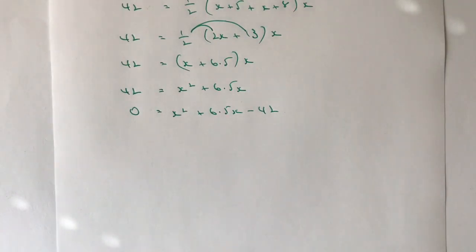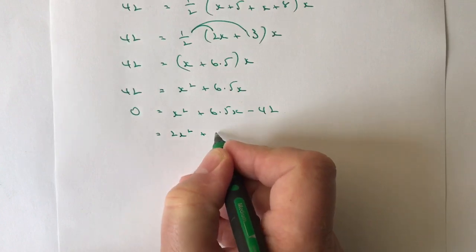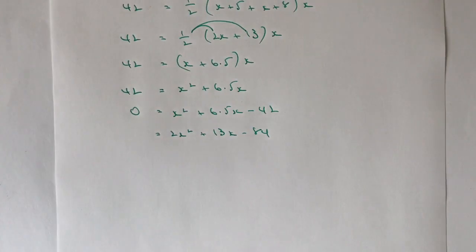6.5x as I mentioned before isn't great to deal with. So what I'm going to do is multiply through by 2. Because if I multiply through by 2,